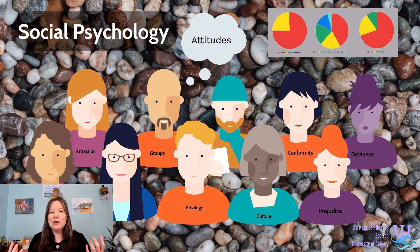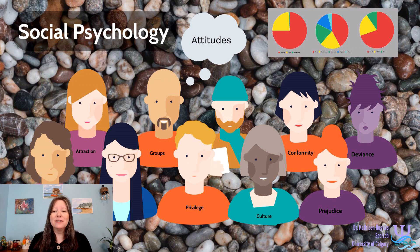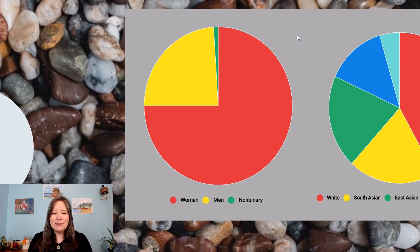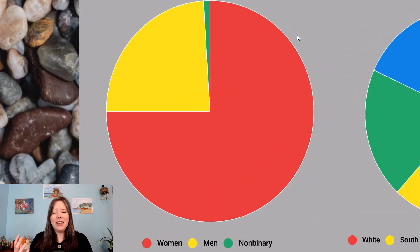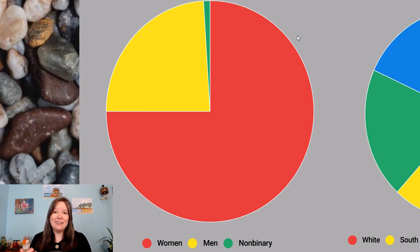With social psychology, we're interested in demographics a lot more than we are in other areas of psychology. Over the last four years here at the University of Calgary, roughly 75% of our intro psychology students have been female, with the remainder almost exclusively male, but with about 1% of our students identifying as non-binary.